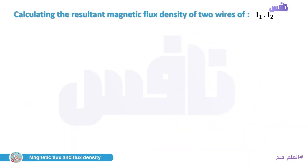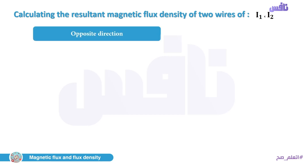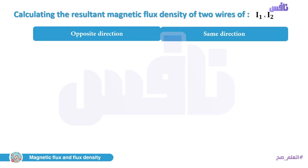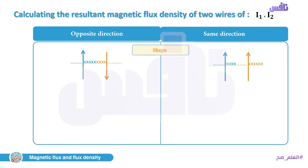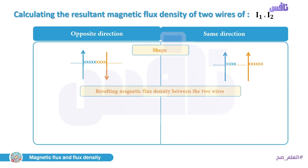Now, how to calculate the resultant magnetic flux density of two wires carrying currents I₁ and I₂. Case one: opposite direction. Case two: same direction. We need to find the resultant magnetic flux density for each case between the two wires.